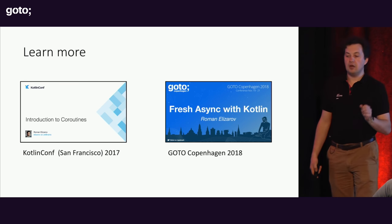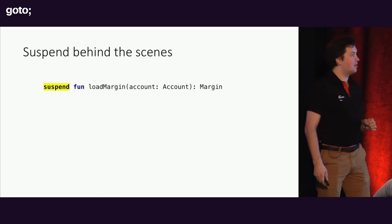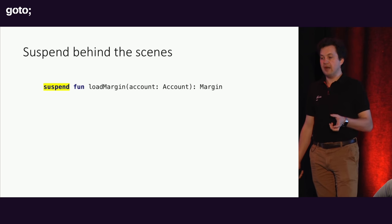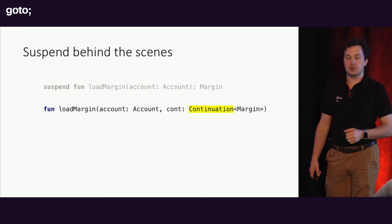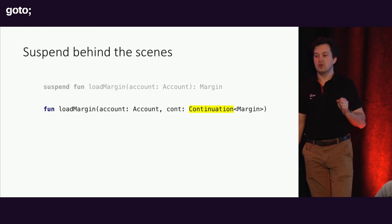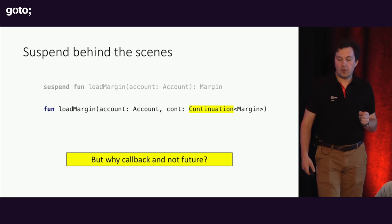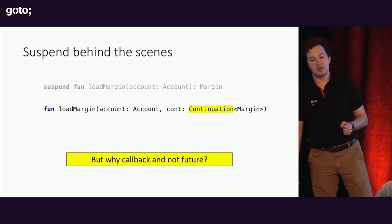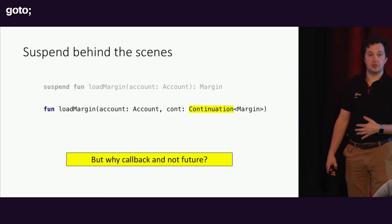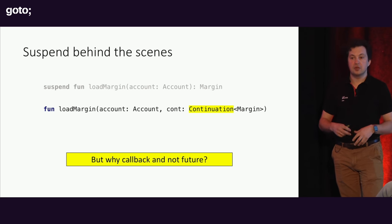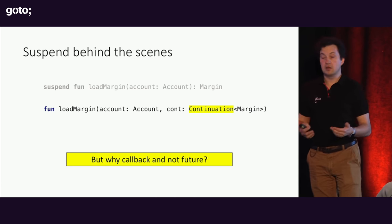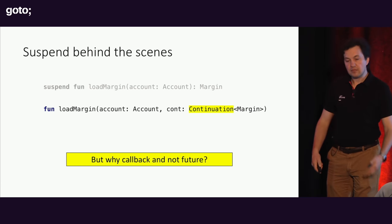For those who don't know how it works: behind the scenes, every suspending function is actually transformed by the compiler into a function with a callback — the compiler adds a special callback parameter. The question is why callback-based rather than future-based, since futures are the most popular approach used in C#, JavaScript, and reactive programming.